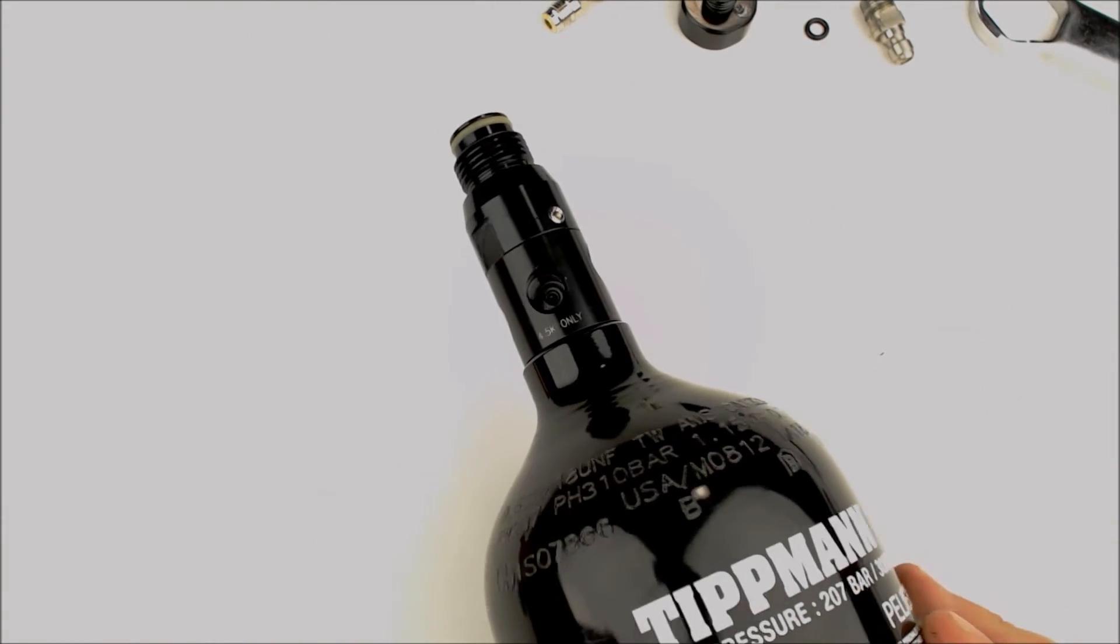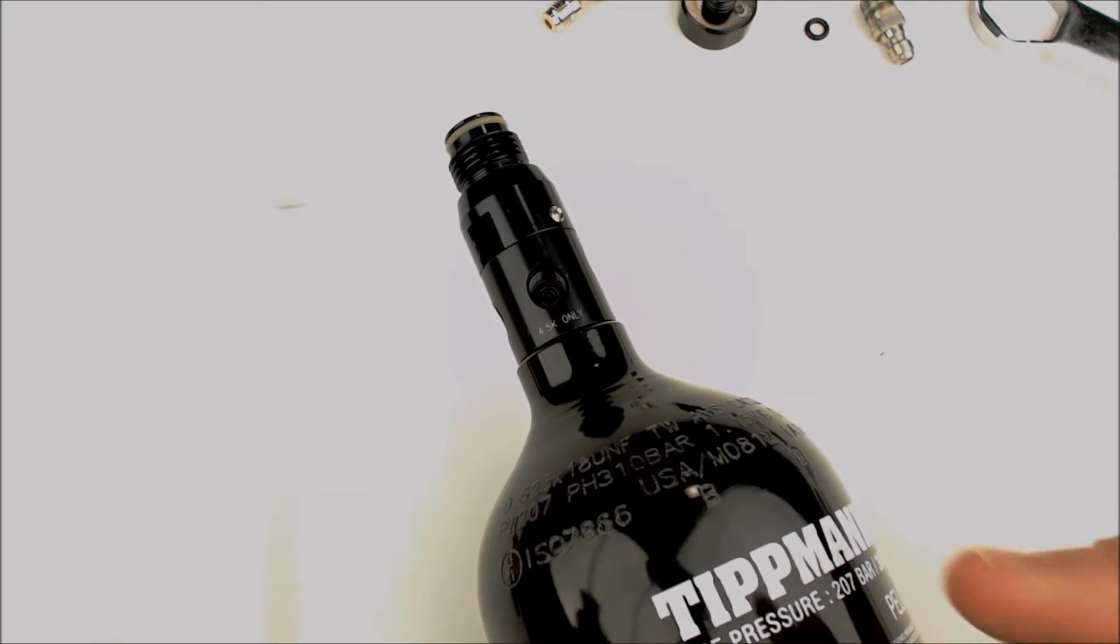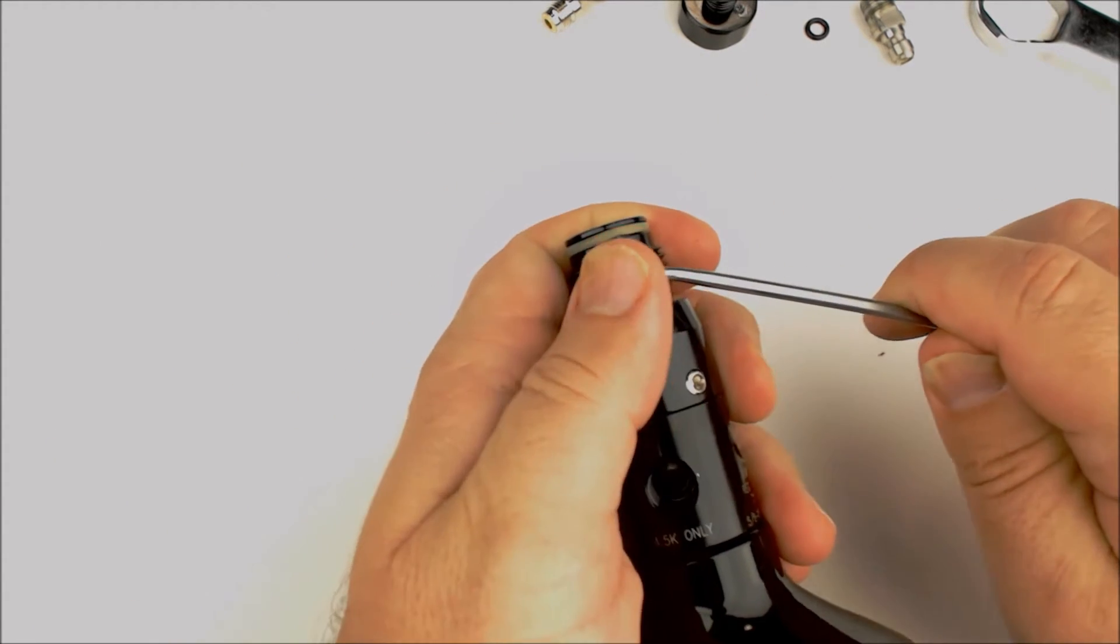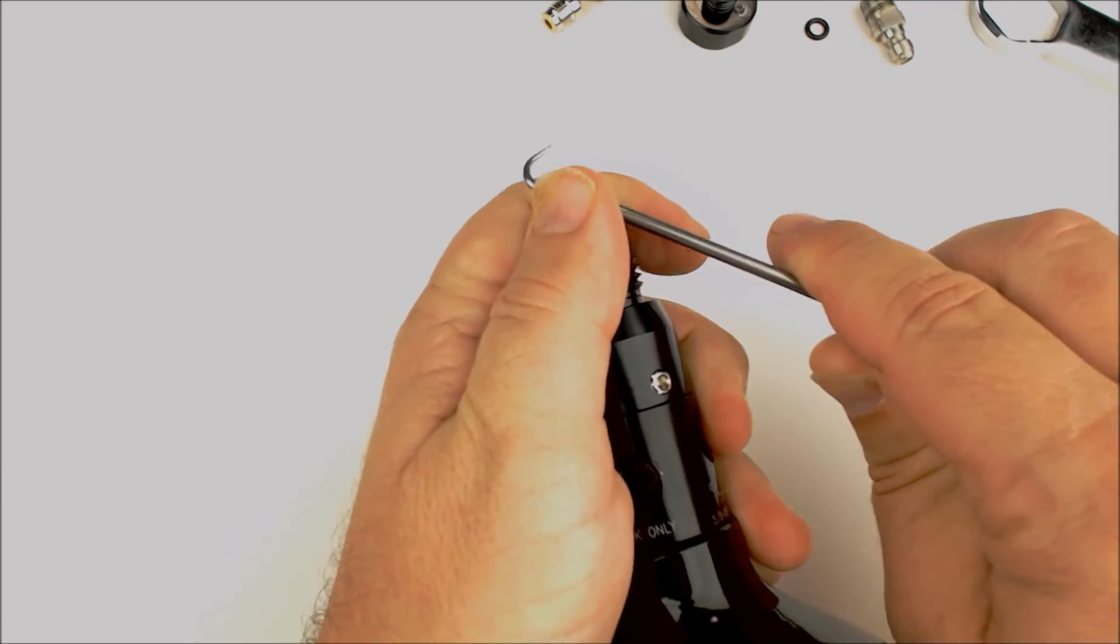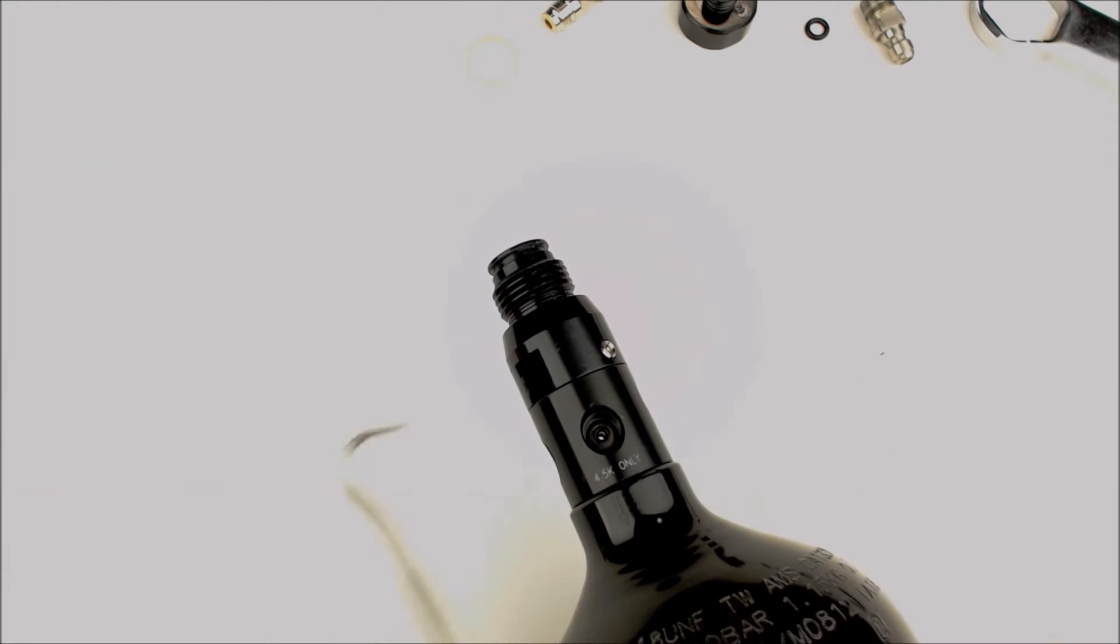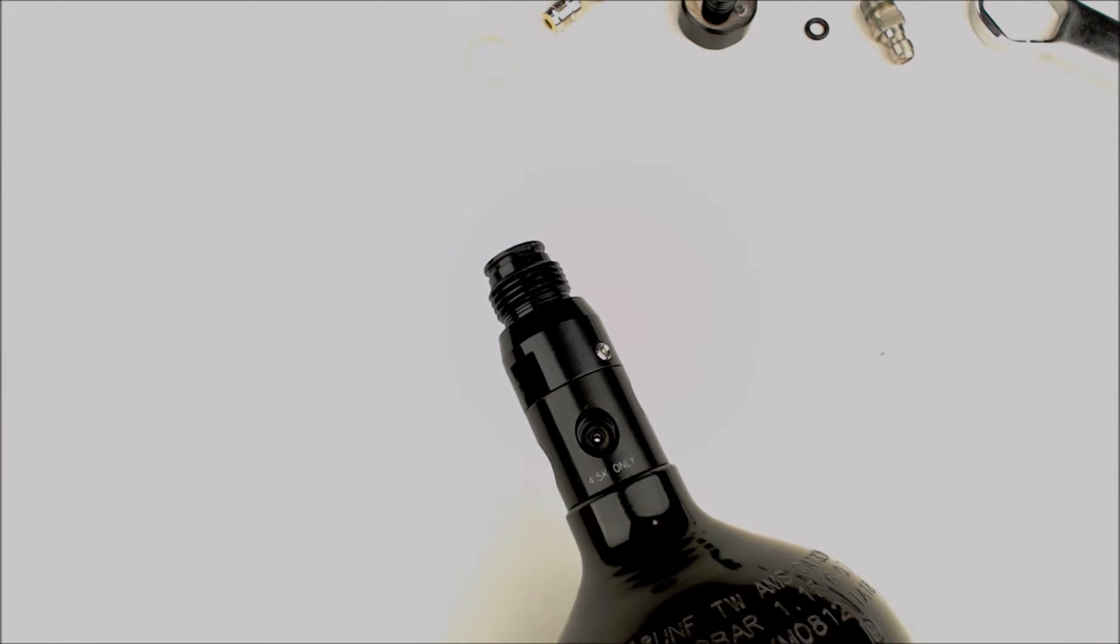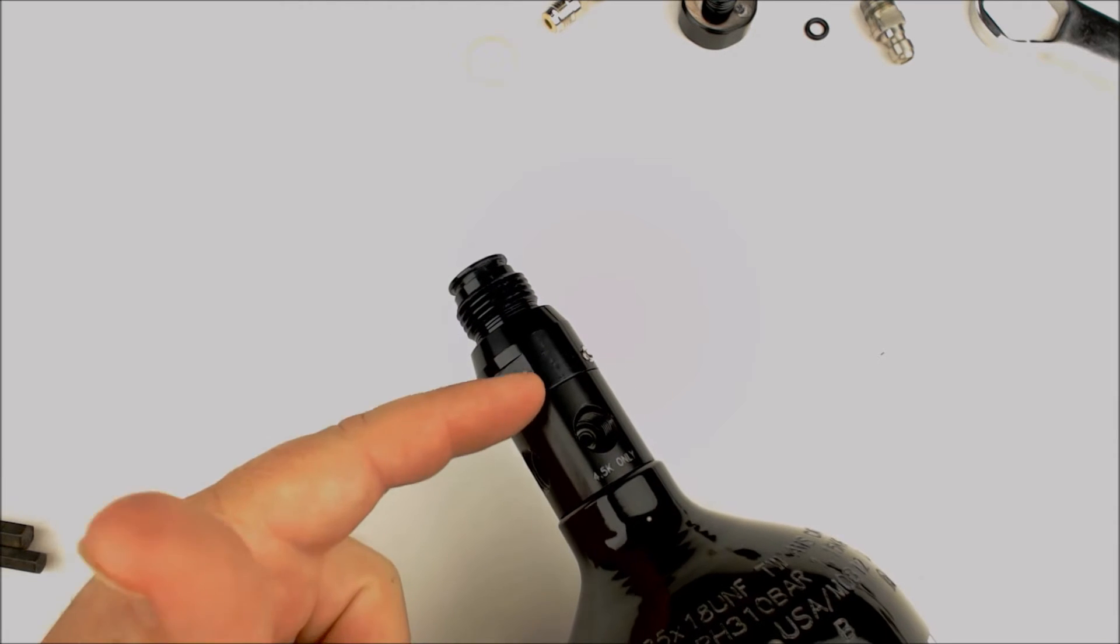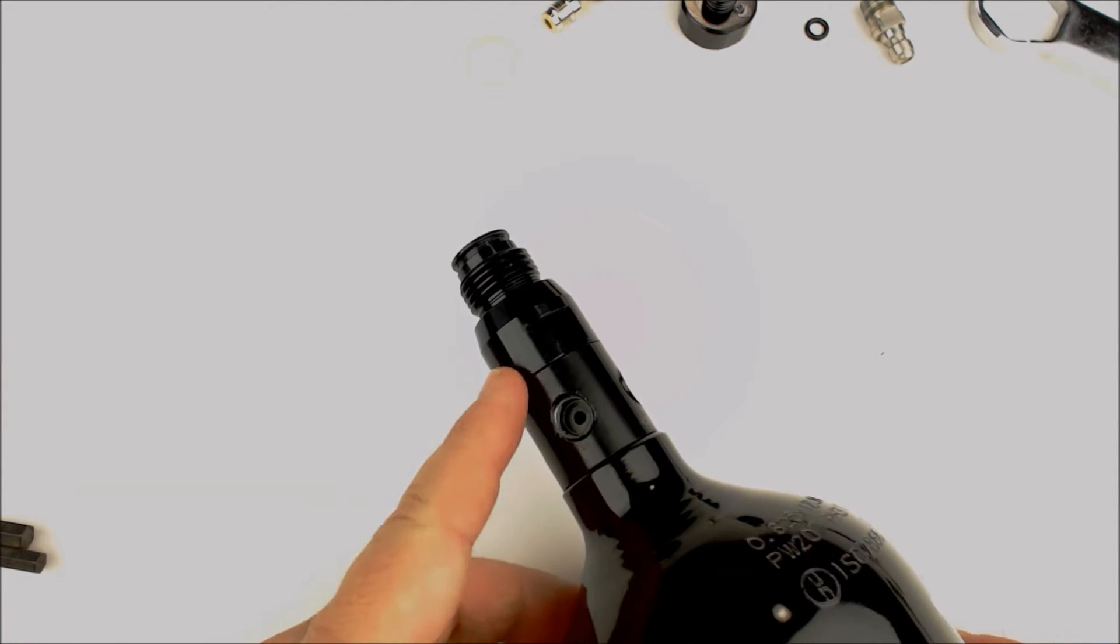So we now are going to remove the top O-ring. Again, this is just your basic bottle O-ring, nothing special. Comes right off. Keep plenty of those on hand. And then the bonnet is held in place. The bonnet is the top part of the reg, held in place with two set screws.